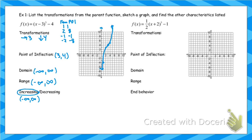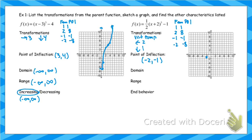Next graph: this one has a vertical compression, has gone left 2 and down 1, so the point of inflection is (−2, −1). From the point of inflection, the normal pattern is right 1 up 1, right 2 up 8, left 1 down 1, left 2 down 8. But because of the vertical compression, I change the up/down amounts: right 1 up 1/2, right 2 up 4, left 1 down 1/2, left 2 down 4.